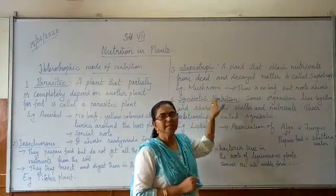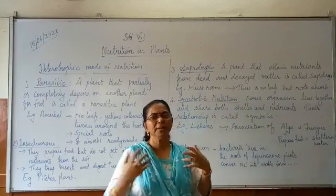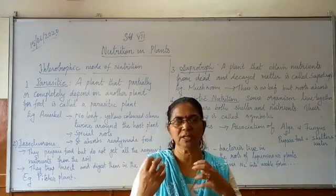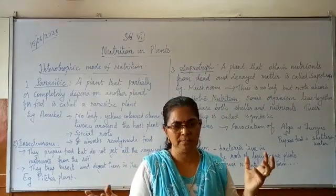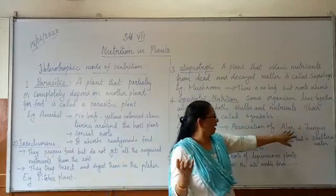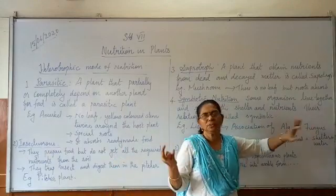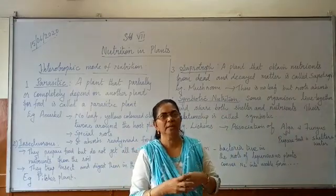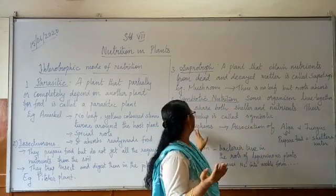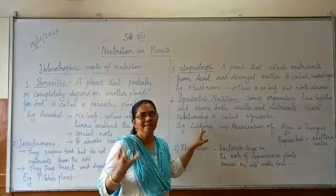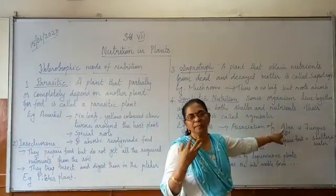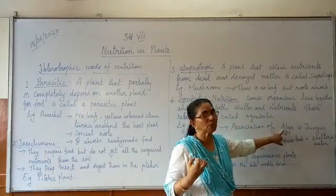Now the fourth one is symbiotic nutrition. In symbiotic nutrition, two organisms have a relationship with each other. For example, the organisms alga and fungus. These two organisms live together. This association between the alga and the fungus is called lichen. Alga has chlorophyll but does not have roots. The fungus cannot prepare food.